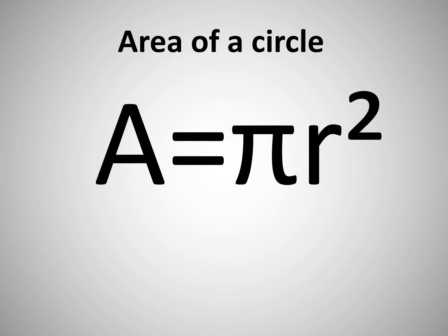Area of a circle: area equals pi times radius squared. A for area, apple, P for pies, and r² radius squared.